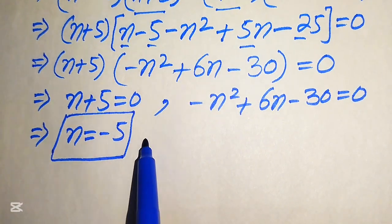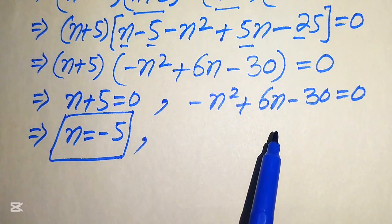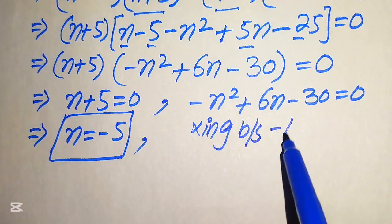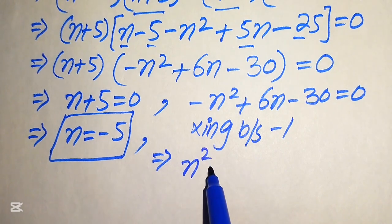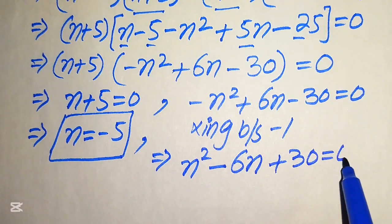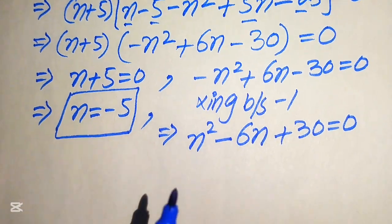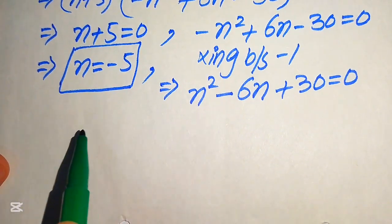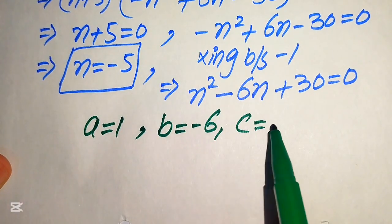For the other roots, we solve the quadratic: minus n squared plus 6n minus 30 equals zero. We rewrite in standard form by multiplying both sides by minus 1, giving n squared minus 6n plus 30 equals zero. The coefficients are a equals 1, b equals minus 6, and c equals 30.